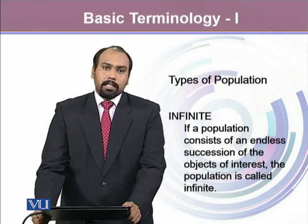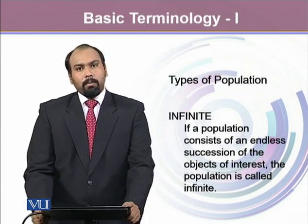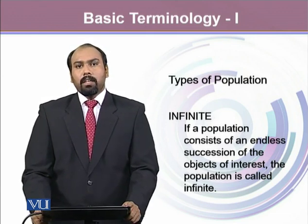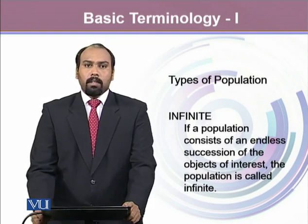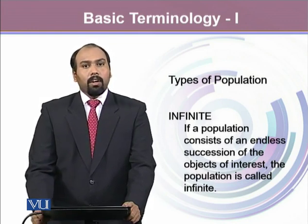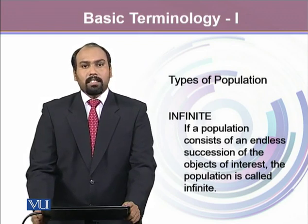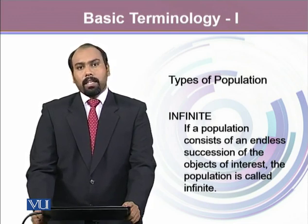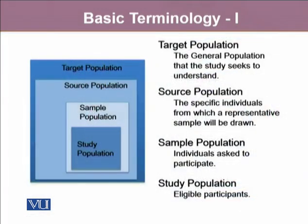The other type of population is infinite population. As the word suggests, this is the type of population when all the units in the population are not countable. We can think of it as the number of cancer tumors or cancer cells in a human body — we may not be able to count them exactly. Such populations are called infinite populations.